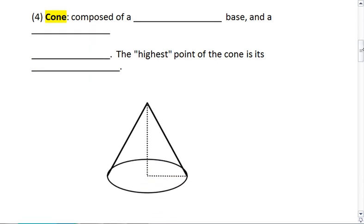The next figure we want to look at is a cone. A cone is something special. It's composed of a circular base and a lateral area. The highest point of the cone is its vertex.